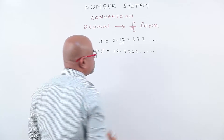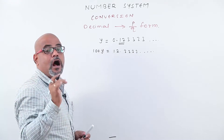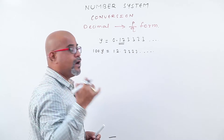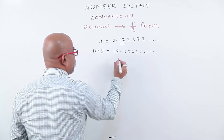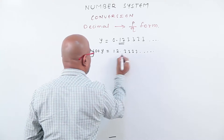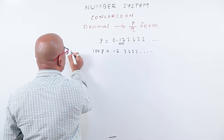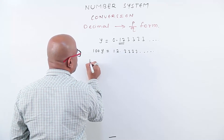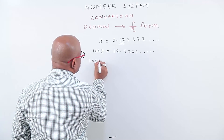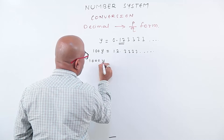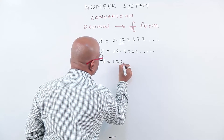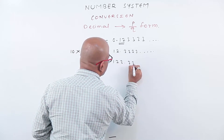Now, let us check how many numbers are recurring. Only one number is recurring. Therefore, multiply this equation by 10. We get 1000y equals to 123.333 and so on.